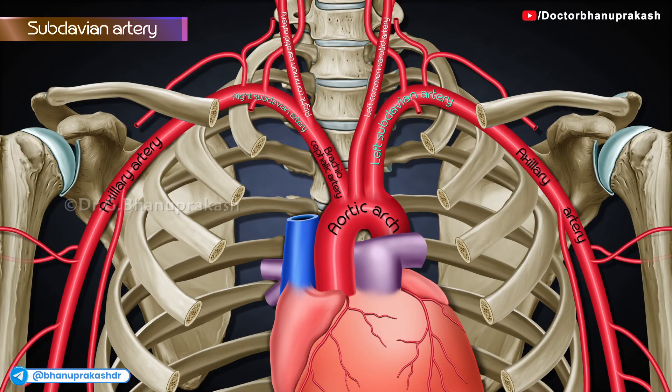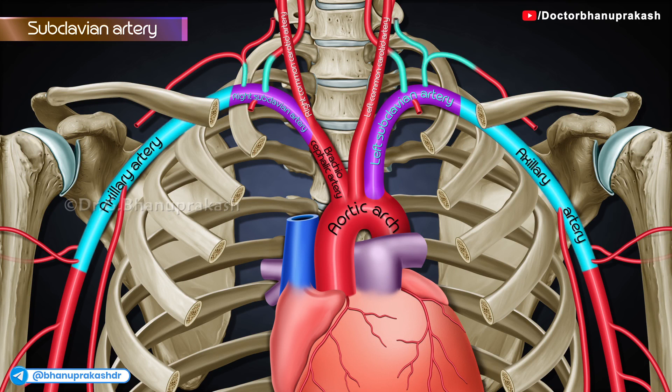Subclavian artery. This is the principal artery which continues as the axillary artery for the upper limb. It also supplies a considerable part of the neck and brain through its branches.